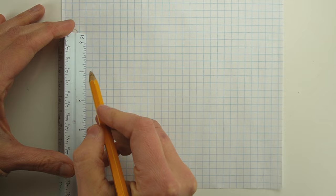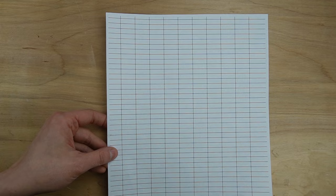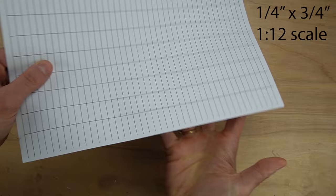To save myself the trouble of measuring, I used a word document to create a quarter inch by three-quarter inch 1:12 scale grid. I left a column of bricks 1 inch long, and you'll understand why later.